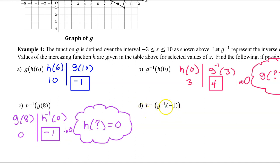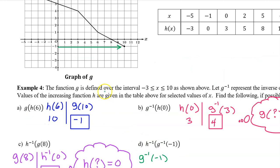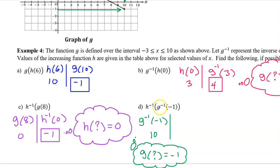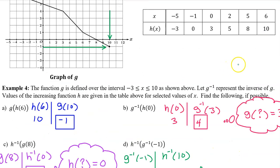Part D: working from the inside out, we begin with g inverse at negative 1. Since we don't have g inverse, we ask ourselves: g at what is equal to negative 1? Here is the output value of negative 1. We can see that g at 10 is negative 1. Now we move on to the outer function, so we must evaluate h inverse at 10. We do not have h inverse, so we ask ourselves: h at what is equal to 10? We see that h at 6 is equal to 10. So that's the answer.